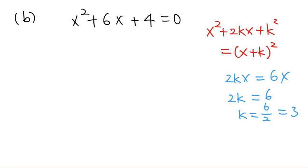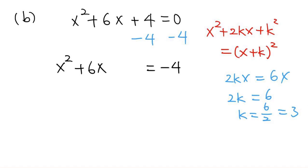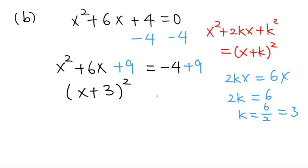What we're going to do is replace the 4 with 9. We subtract 4 from both sides — x squared plus 6x, and the 4 terms cancel — giving negative 4 on the right. Then we add 9 to both sides. Now we have a perfect square on the left: x plus k, where k equals 3, the whole thing squared. On the right hand side, negative 4 plus 9 equals 5.